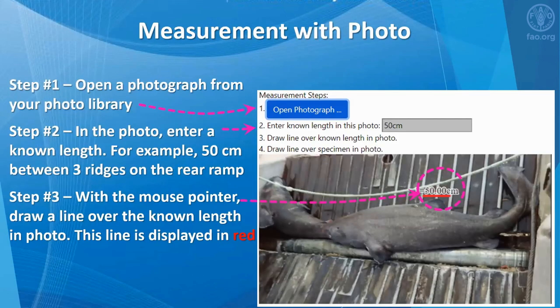Now for the measurement of a species in a photo. For the crew's safety and the urgency of returning a species to the ocean, the website provides a feature to estimate the measurement of a discarded specimen in a photograph. Step one is to open a photograph from your photo library. Step two, in the photo, enter the known length — for example, 50 centimeters between the ridges of the rear ramp. Step three, with a mouse pointer, draw a line over the known length in the photo. This line is displayed in red.